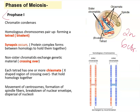Spindle fibers are forming, and then crossing over takes place. Homologous chromosomes pair up, come together, and form a tetrad. A protein complex is laid down between those homologous chromosomes, and specifically non-sister chromatids exchange pieces of their genetic material. We can now call these recombinant chromosomes because genes have shuffled. We can actually see where crossing over takes place — it appears as an X-shaped region called a chiasma.